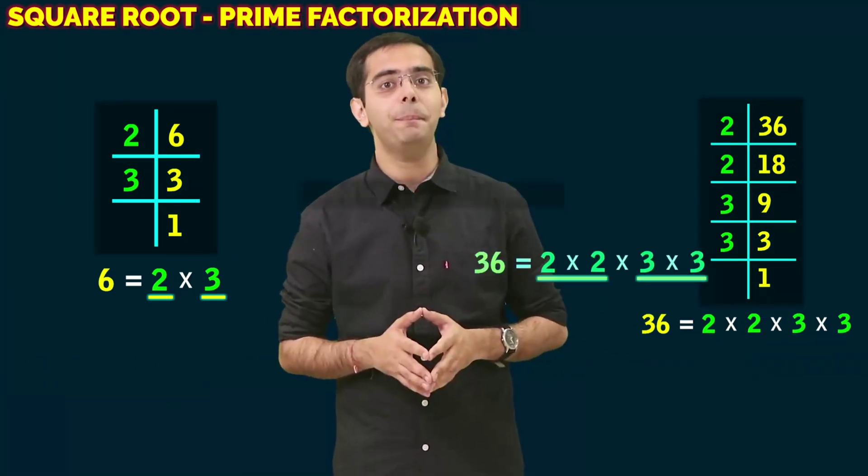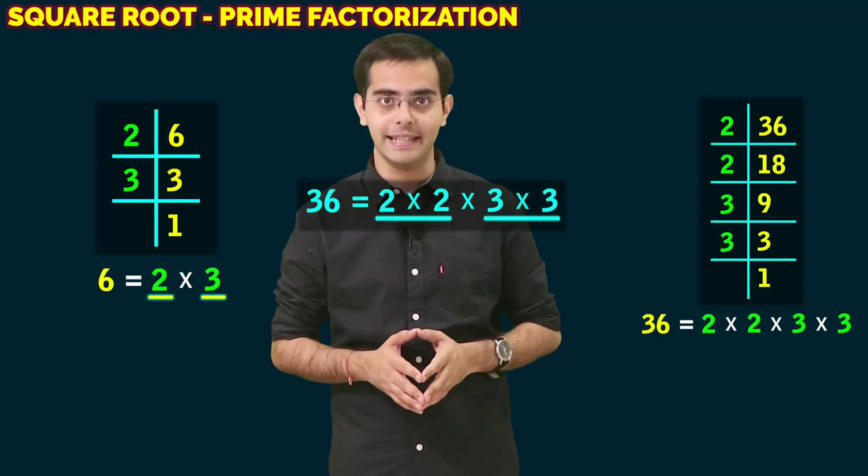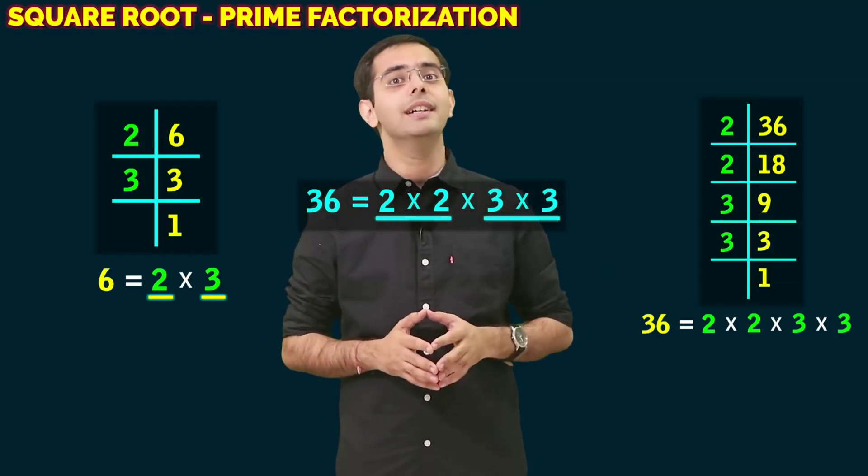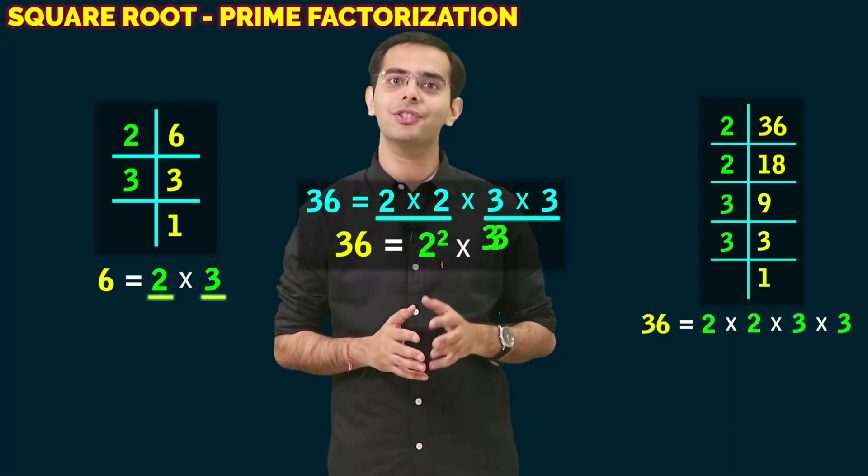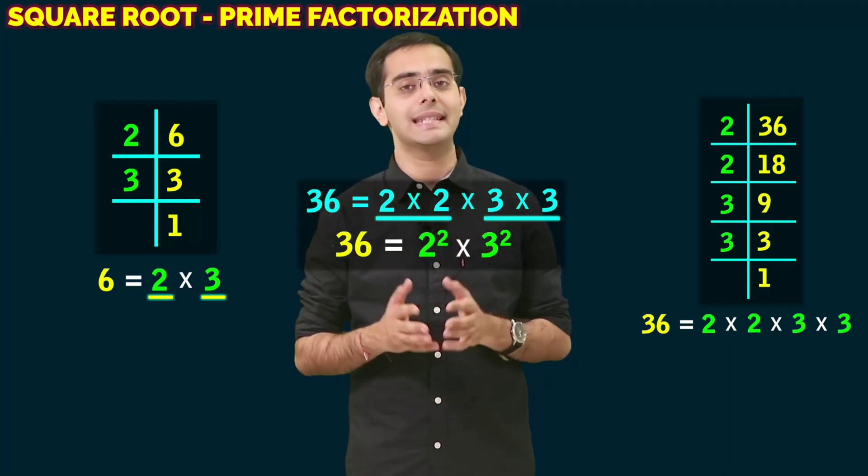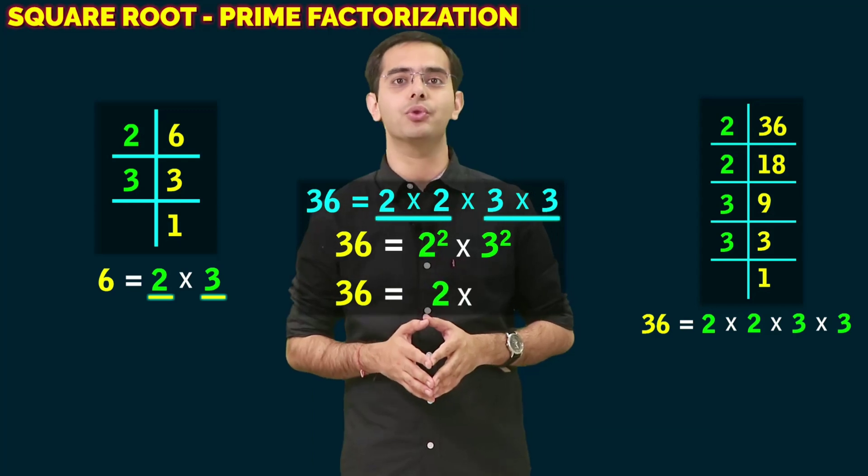So if we pair the prime factors of 36, we get 36 = 2² × 3², or this can be written as (2 × 3)².